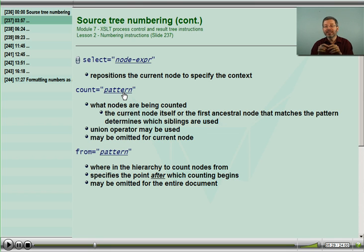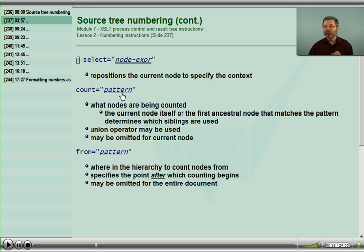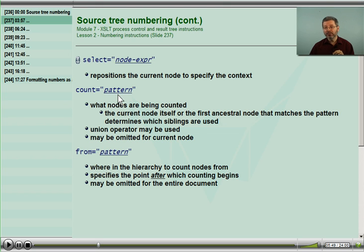When it hits the ancestor being counted, it then counts amongst the siblings. But it will count all of the nodes in the pattern amongst the siblings, not just the like-named node — it will count all of the things being counted. I'm going to depict this in a diagram in a few slides, and we'll get there and talk about that.